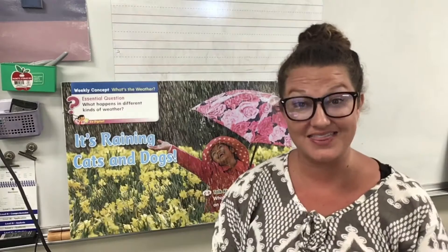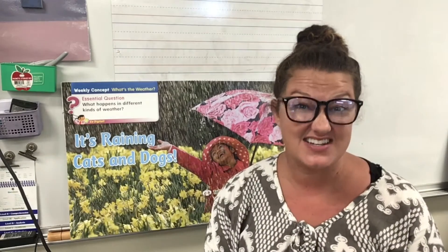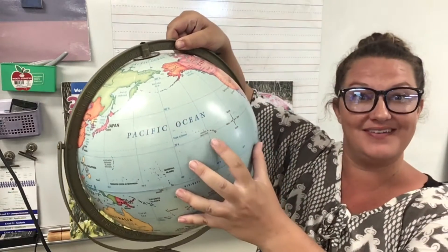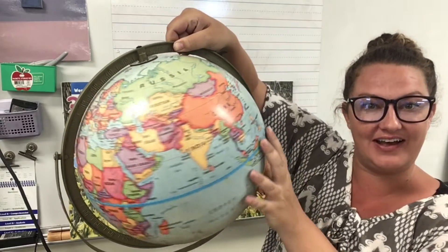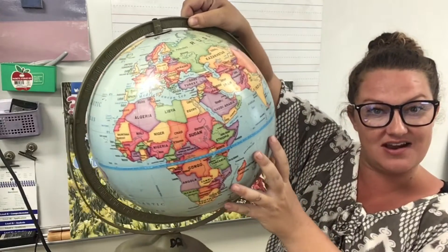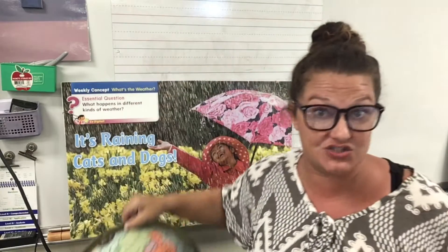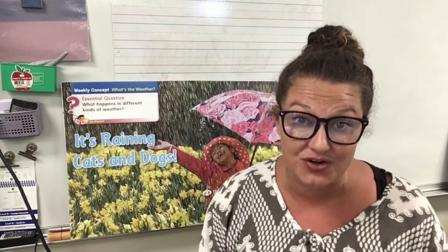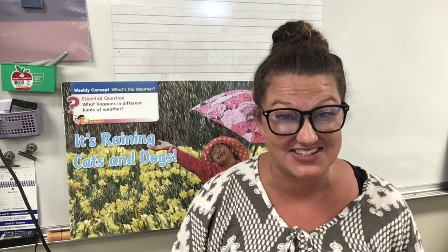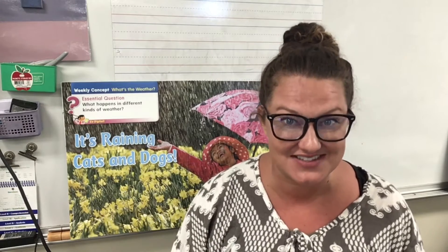Now let's read a really cool story about a type of weather. The story that we're going to read next takes place in Africa. Here we are on the globe in Hawaii — Africa is way over here, and it's very big. This is Africa, where our story takes place. Another word for that is the setting. The setting of our story is Africa. And as we read, we're going to be thinking about the characters too — the people or animals or things that are in the story.